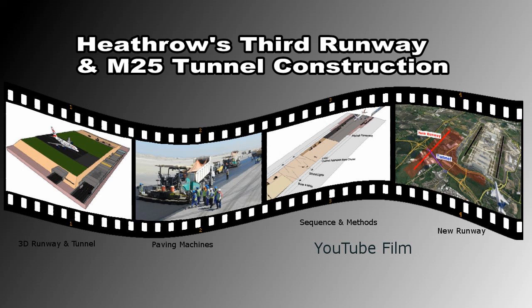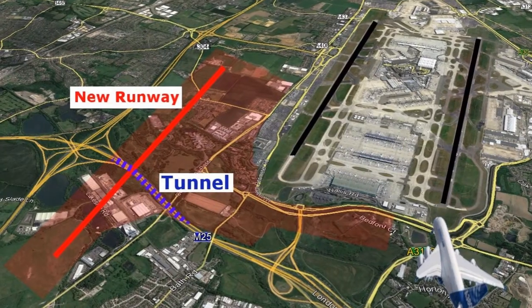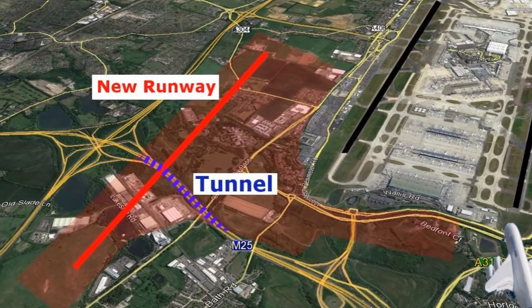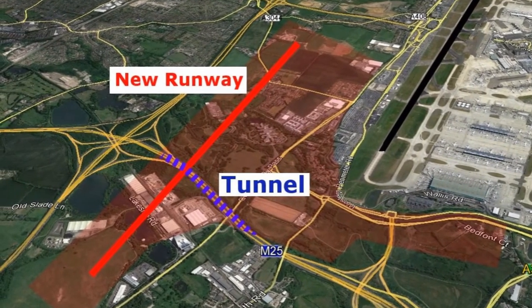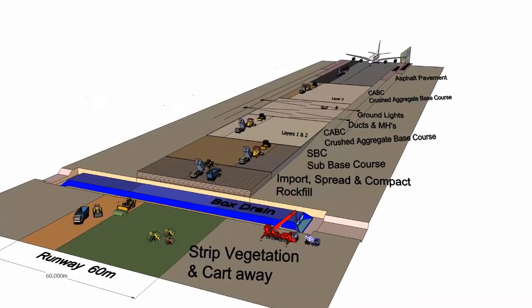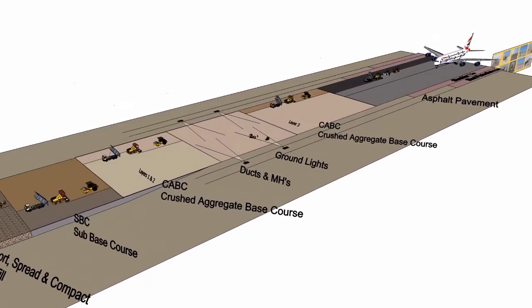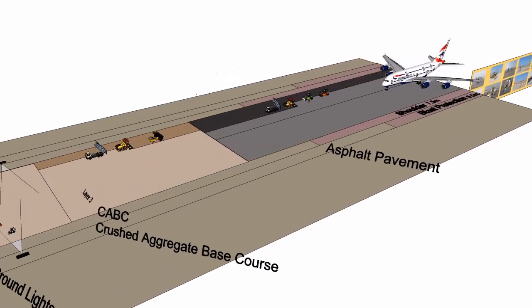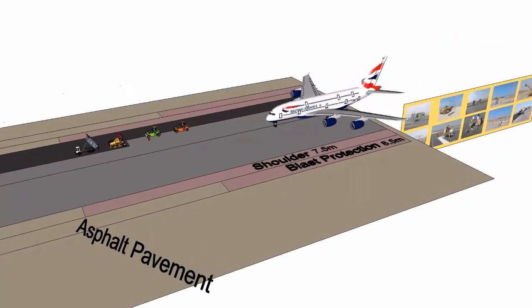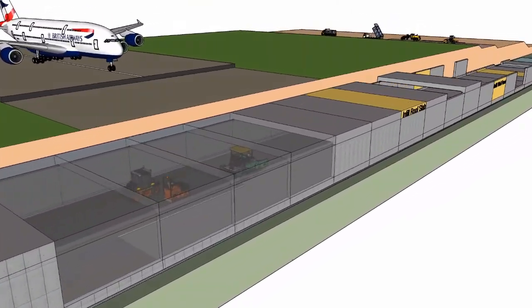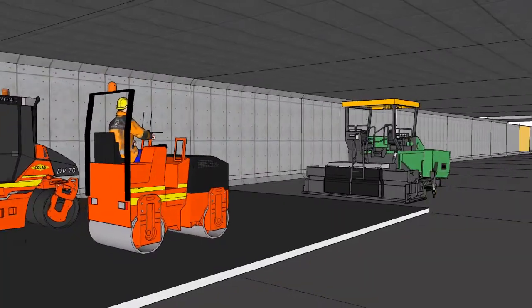Third runway and M-25 tunnel construction. The proposed runway will be parallel to the two existing runways, allowing aircraft to land and take off on all the runways at the same time. Animation showing the construction sequence to build a runway and the construction of the M-25 tunnels, with the proposed runway on an embankment.